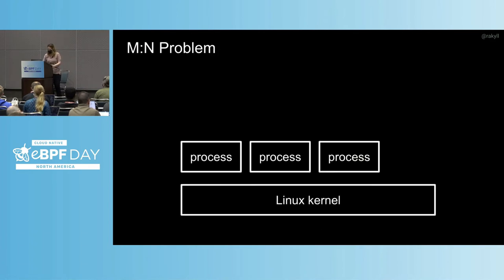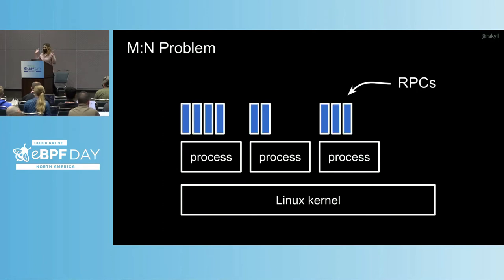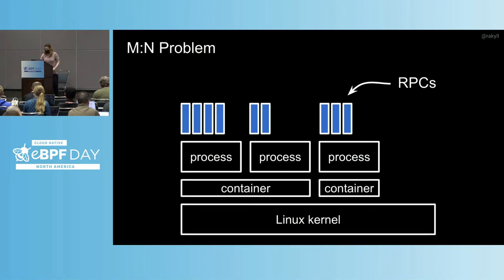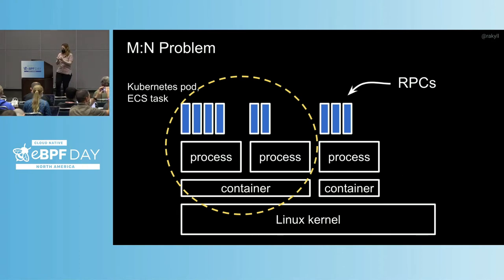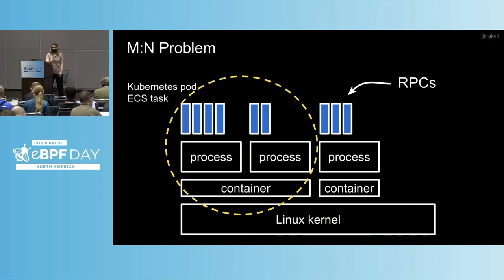Context matters a lot. This is a typical M:N problem. We usually have multiple processes, and there are multiple RPCs handled by each process. You have containerization as the namespace and orchestration as the logical grouping. You want to be able to capture as much of this type of context to figure out where the issue originated. When you're narrowing down your telemetry, you want to be able to quickly see what is being affected in order to understand your blast radius.